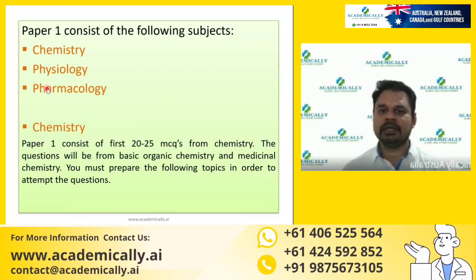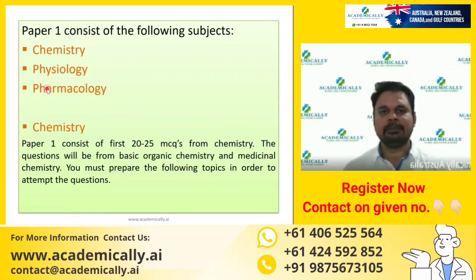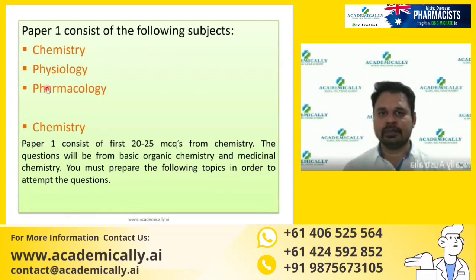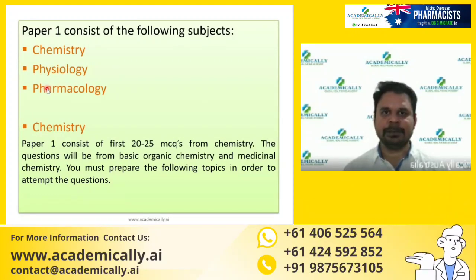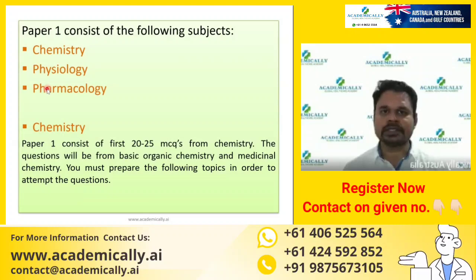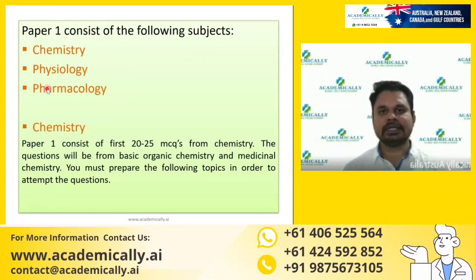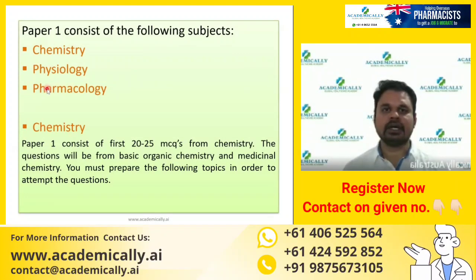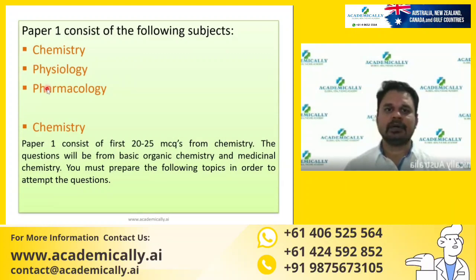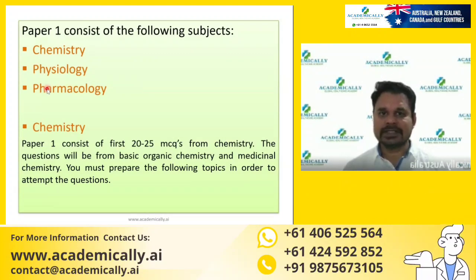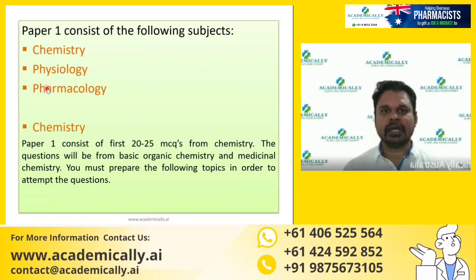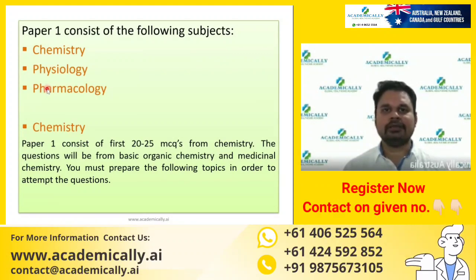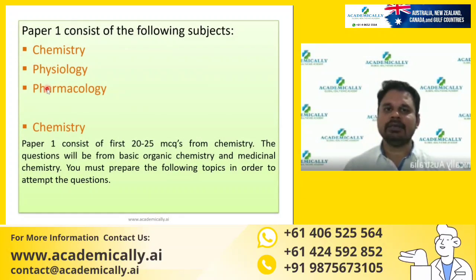Chemistry is the first section in Paper 1, and you can expect roughly 20 to 30 questions from chemistry. Importantly, they won't ask heavily from core chemistry structures or structure-activity relationships, and they won't ask about synthesis. Based on direct drug structures, you can expect only about four or five questions.